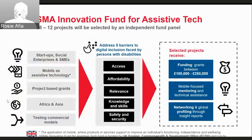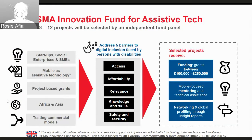The GSMA Innovation Fund for Assistive Tech is looking to fund around 8 to 12 projects, which will be selected by an independent fund panel at the start of next year. We're looking to fund startups, social enterprises and small and medium enterprises. NGOs, academic institutions, UN agencies and MNOs are not eligible on this occasion, but we strongly encourage them to apply as part of a partnership. Projects must be using mobile or digital technology as an assistive technology and must be focused on persons with disability as a primary audience. Our focus is Africa and Asia, and we're also looking to test commercial business models wherever possible.